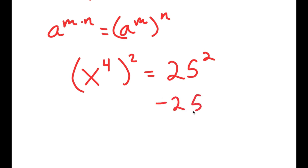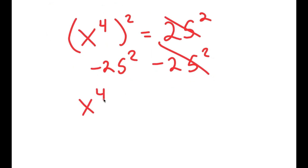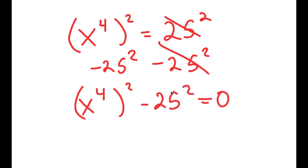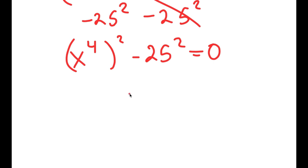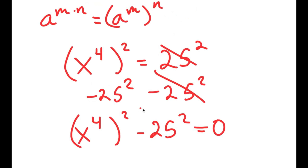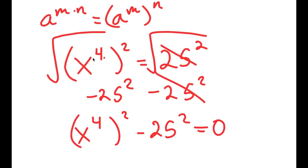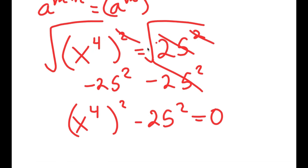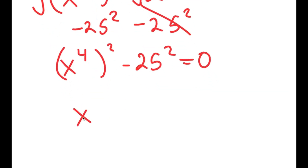Subtracting 25 squared from both sides gives x to the 4th squared minus 25 squared equals 0. Taking the square root on both sides to cancel the squares, I get x to the 4th minus 25 equals 0.